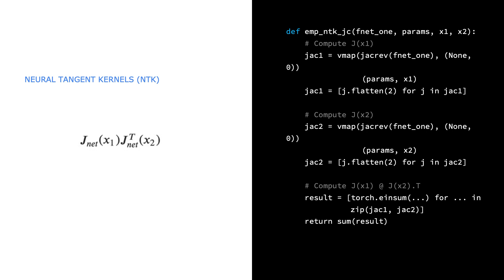The batched case is shown here with two batches, x1 and x2. Here, we now compute the matrix product between the Jacobians of all combinations of points in x1 and x2. To fit on the slide, I've excluded the einsum that does the matrix product between the Jacobians.